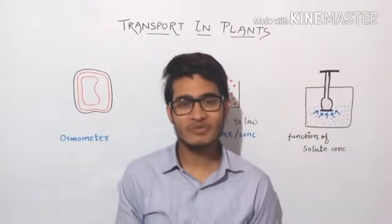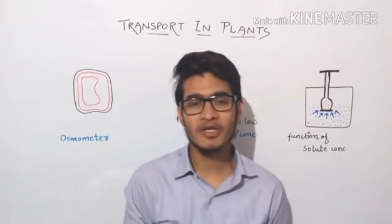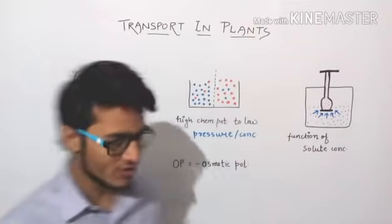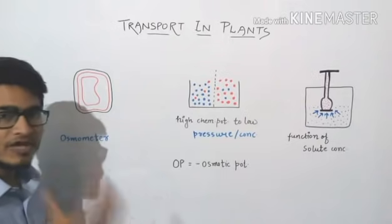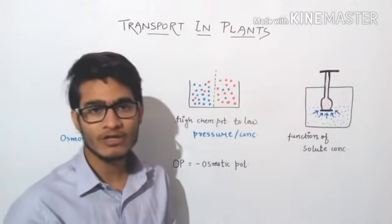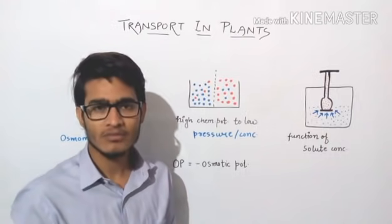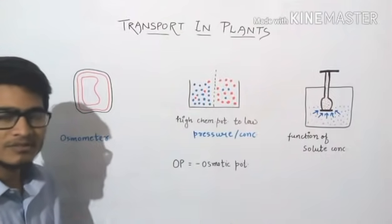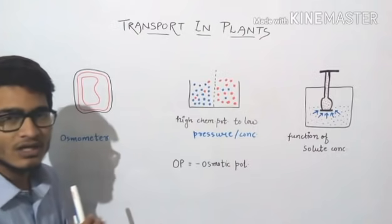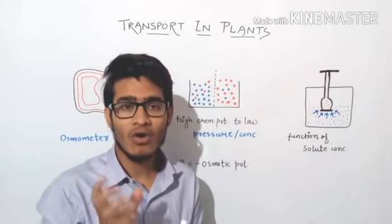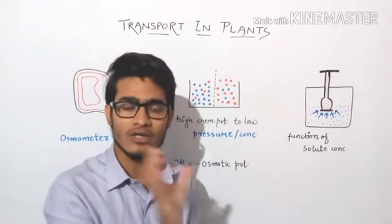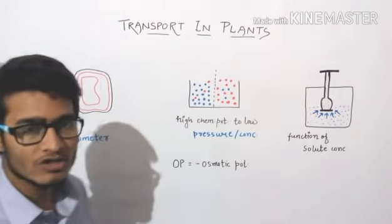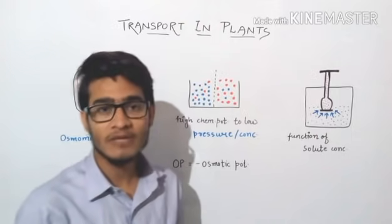Hello guys and welcome back to another video from Vipin Sharma Biologic Tutorials. In this particular video we are going to talk about osmosis in detail. Osmosis is the phenomenon of transfer or movement of solvent molecules — or we can say water, because it is a universal solvent — from its high concentration to its low concentration. From high chemical potential or high water potential to the low water potential, when water moves under a gradient through a semi-permeable membrane, that is known as osmosis.